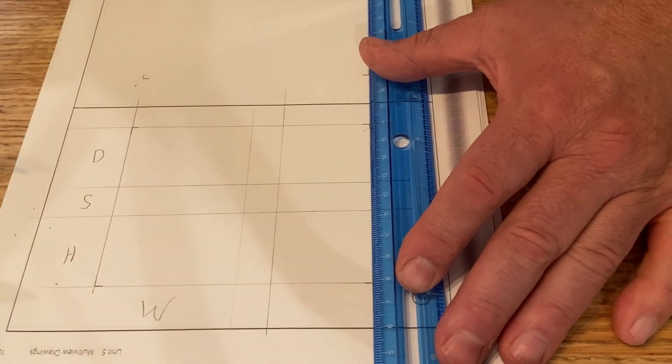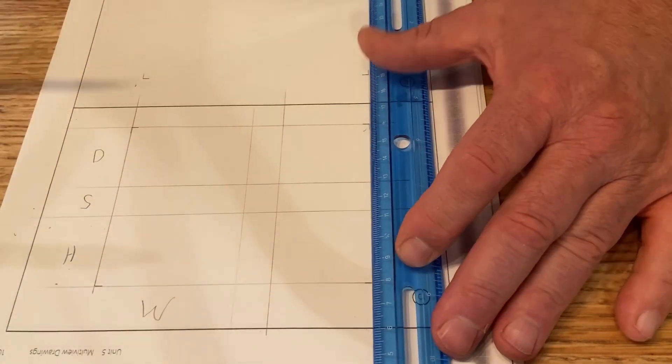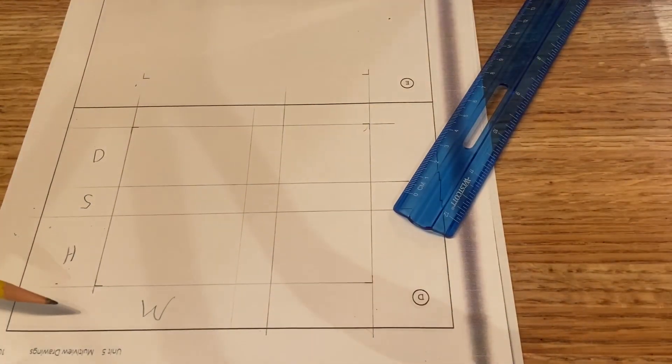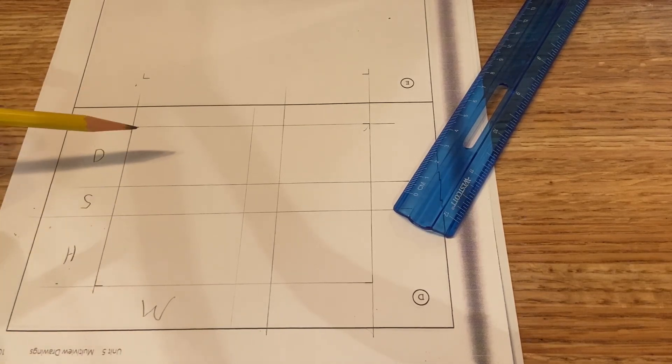And now here in my depth, again, my depth equals my depth. And we've got these, what I call the 8 lines, 4 horizontal, 4 vertical.